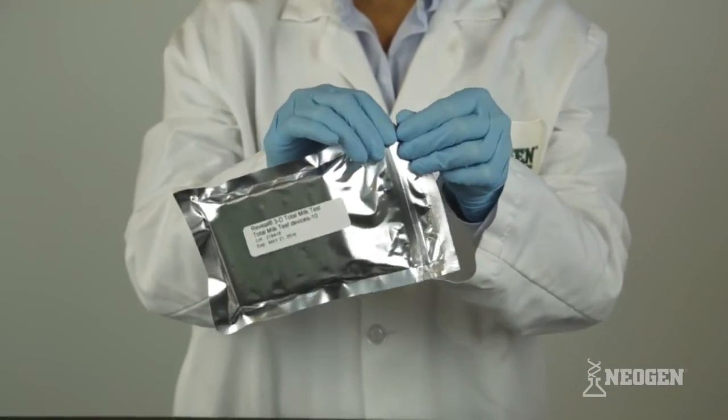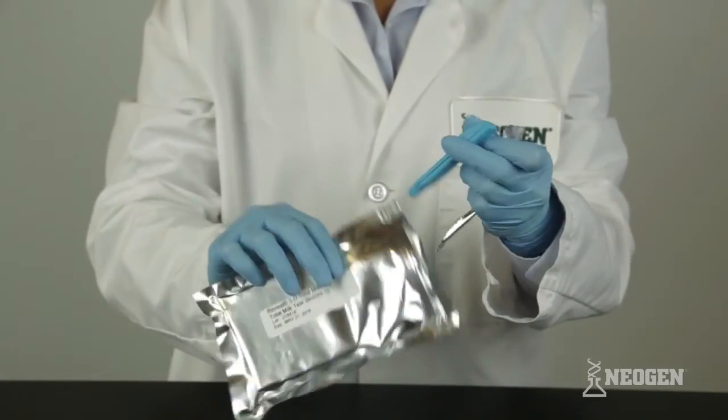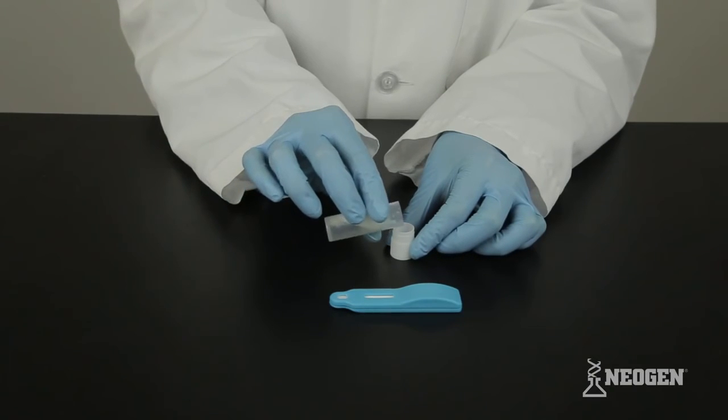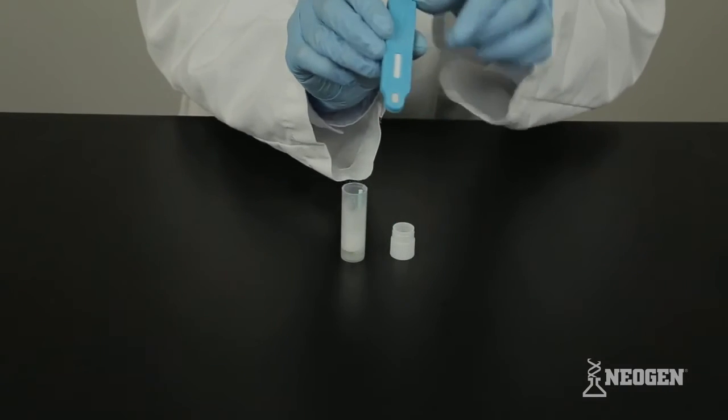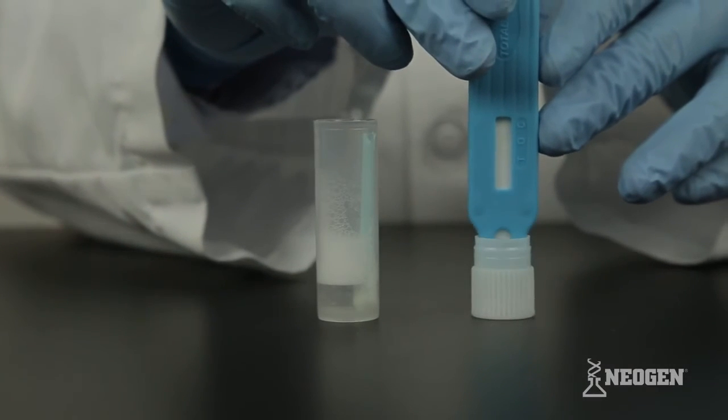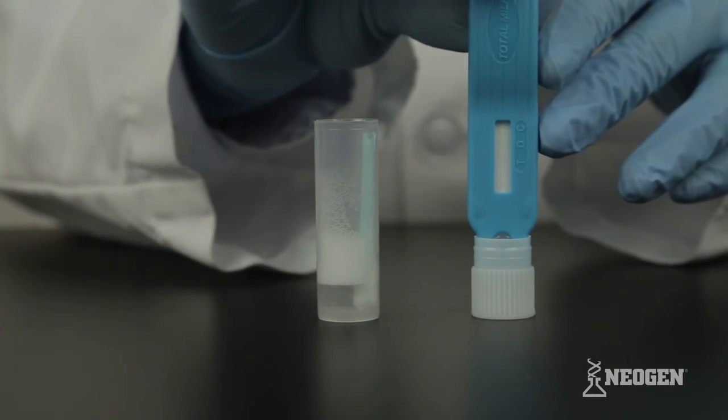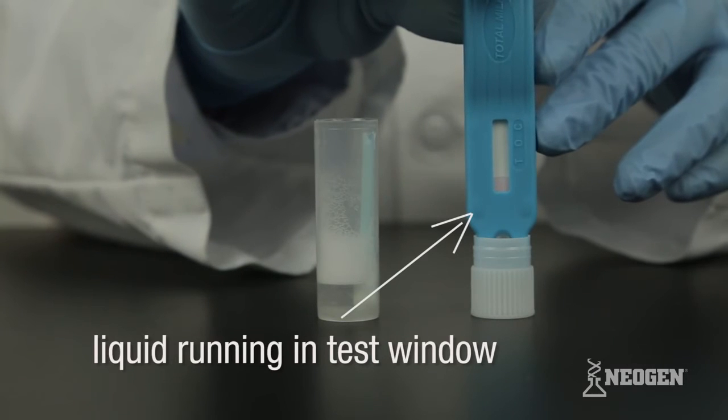Remove one Reveal 3D test device from a foil pouch that has warmed to room temperature. Remove the lid from the sample tube, then completely fill the lid with liquid from the sample tube. Any froth should remain in the tube. Dip the head of the Reveal 3D device into the liquid in the lid. Ensure the cavity is saturated with the liquid. Hold the device in the lid until you see the liquid running in the test window.